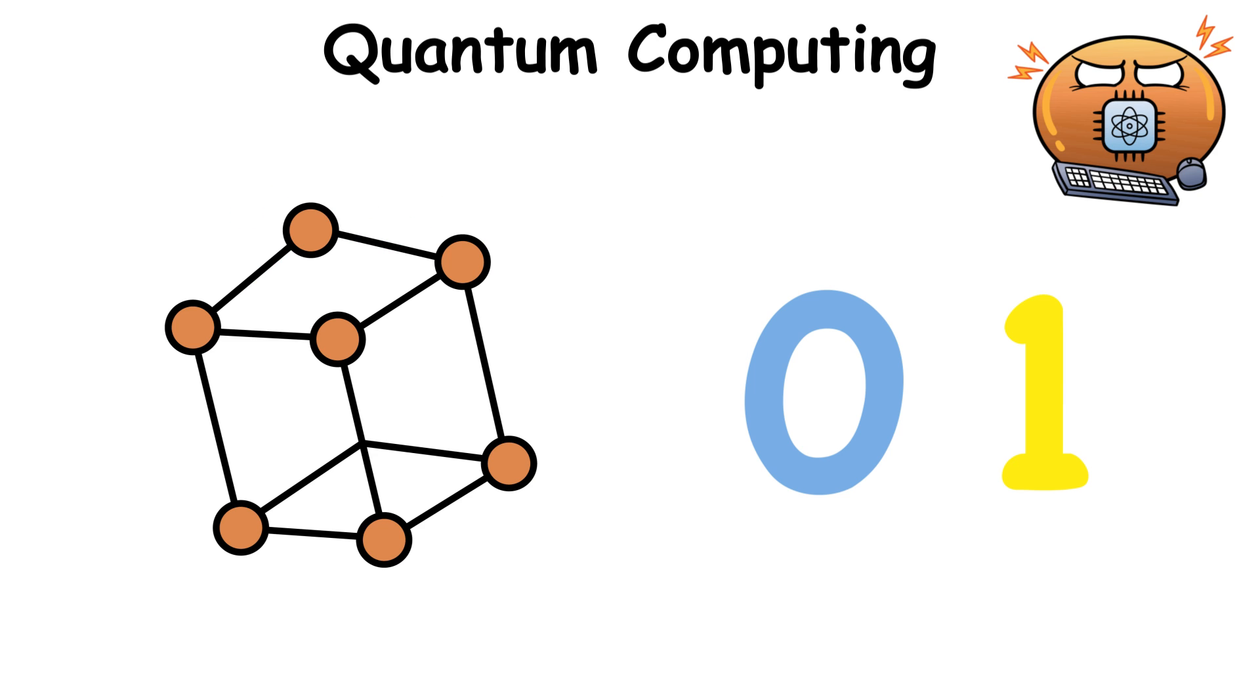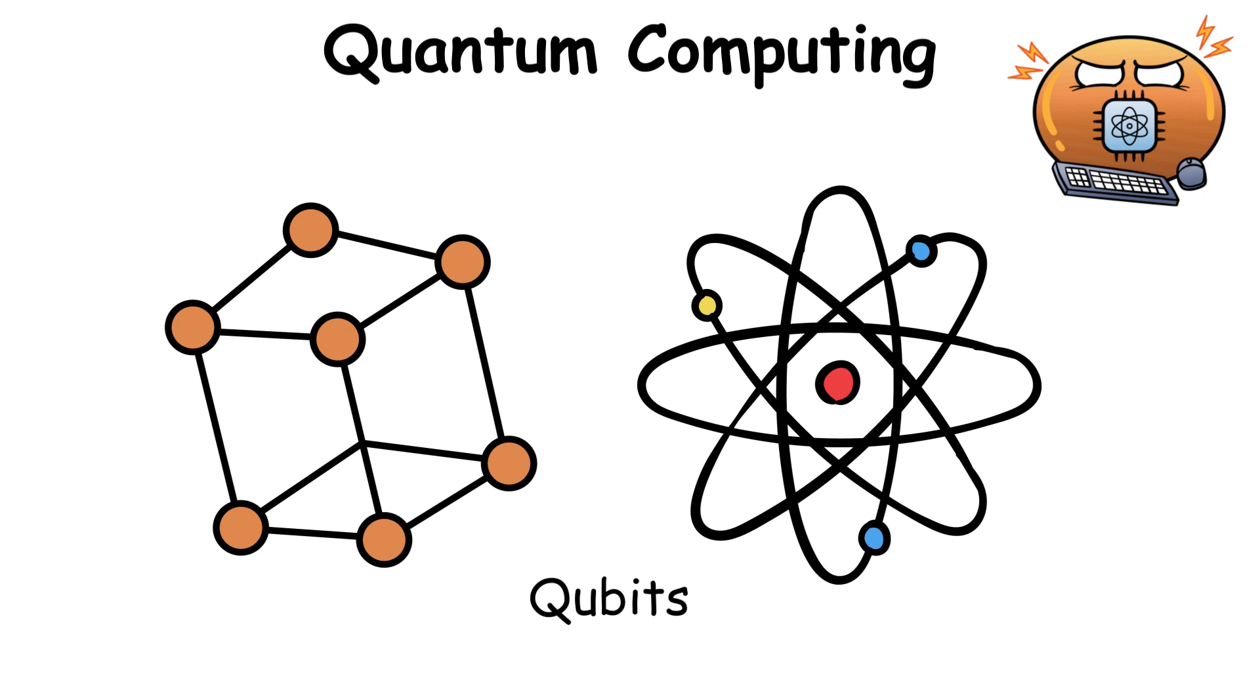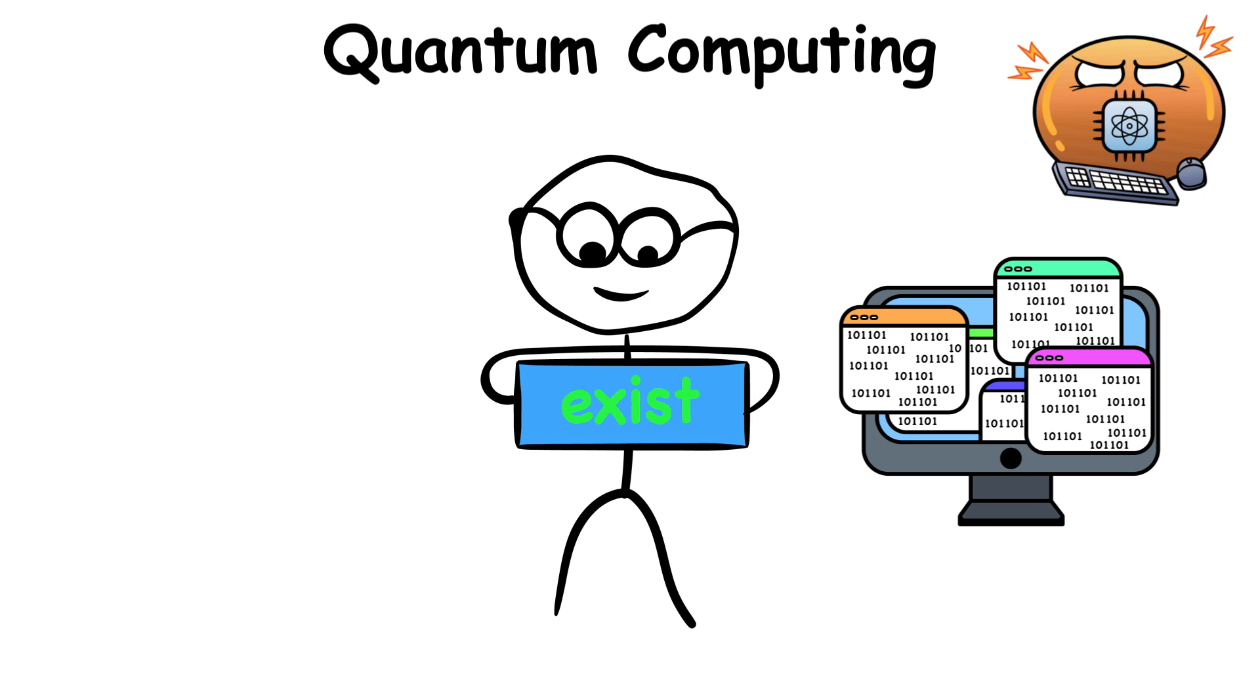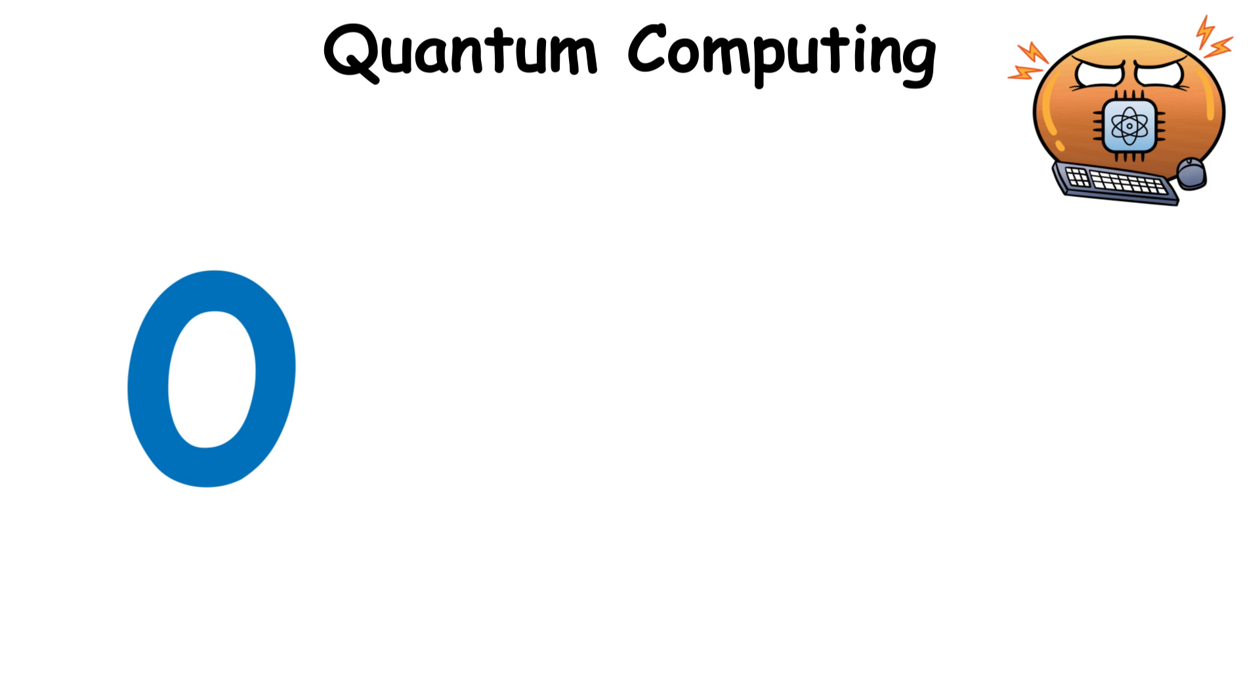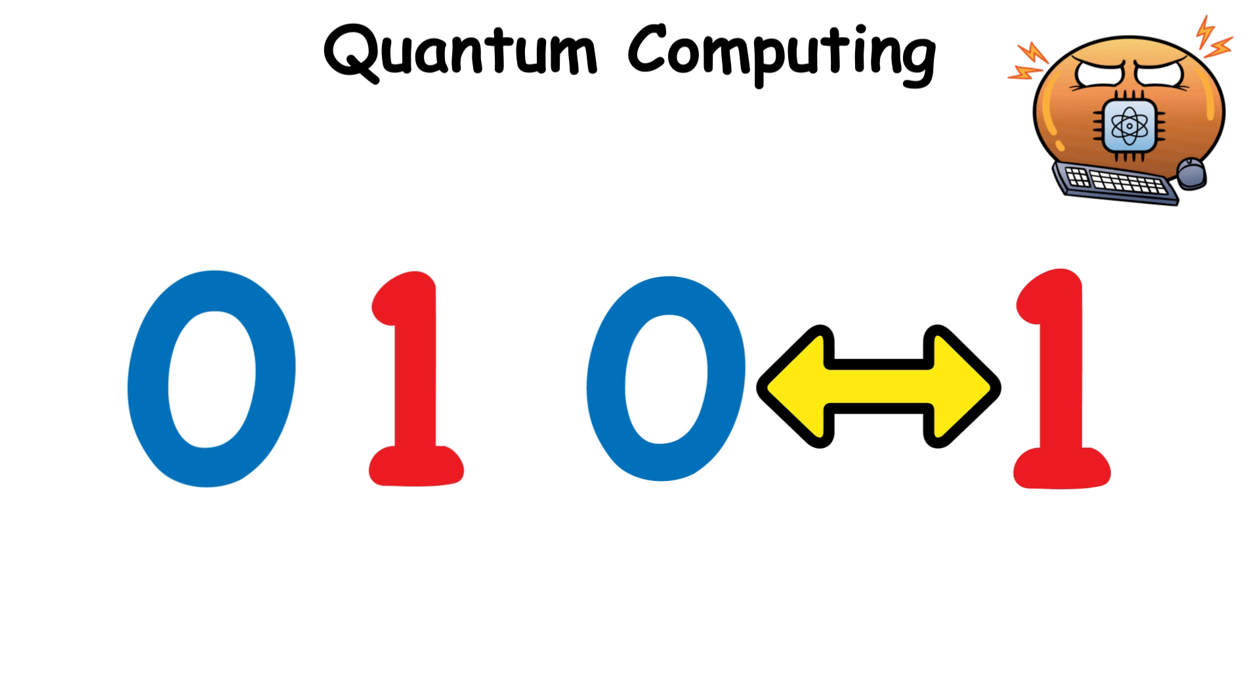However, in the quantum world, computers exchange quantum bits, or qubits, which can exist in multiple states simultaneously because of quantum superposition. So these bits can be zero, one, or both zero and one at the same time.